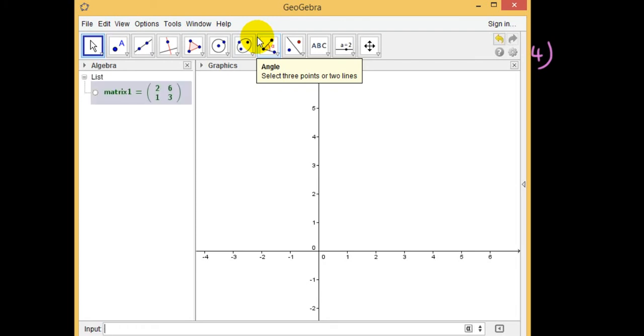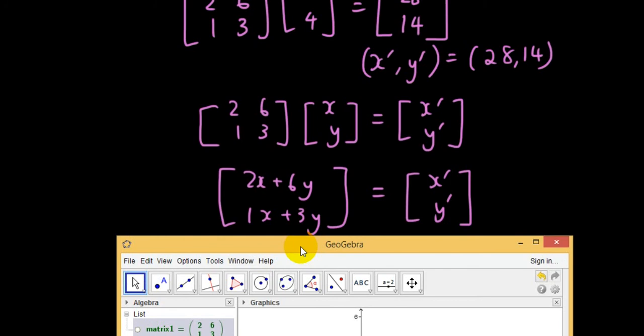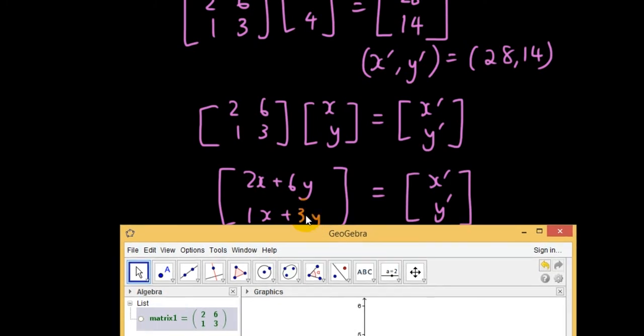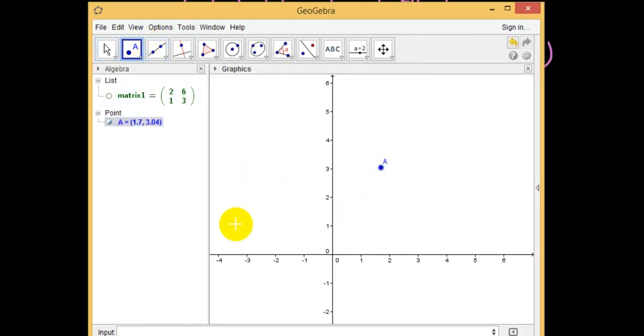And I'm going to just assign a random point on the screen, so point A, and then I'm going to multiply matrix 1 by point A which gives us point B.